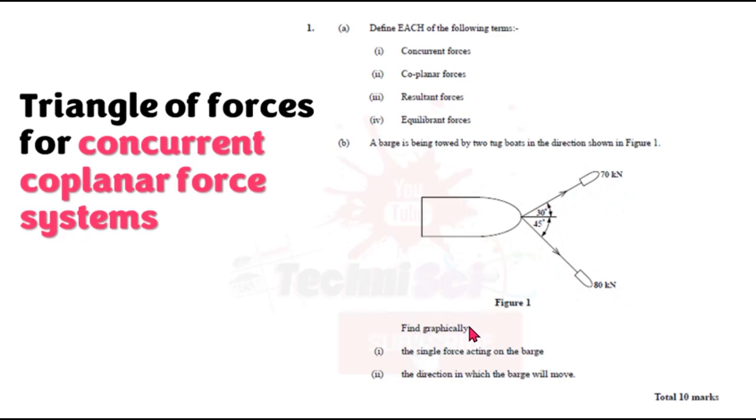The question continues to say, find graphically. Remember, we said that graphically means using a diagram rather than calculating. So it says, find graphically, the single force acting on the barge. So remember now your resultant is the sum of two or more forces. In this case, we have two forces. So we are going to be adding tugboat one to tugboat two, the force that they are exerting to get that single force, which is our resultant. The direction in which the barge will move. So what are they asking you in essence in these questions? The single force acting? They want you to tell them the magnitude of the resultant. The direction in which the barge will move? They want you to tell the direction. That's what they basically want. So now let's go into AutoCAD to complete this question.